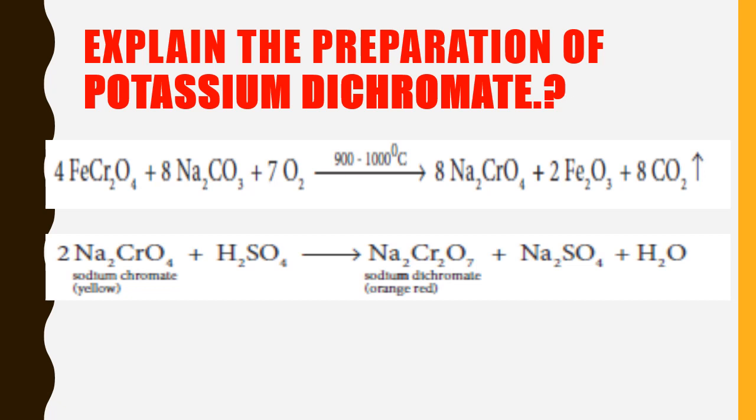The color is yellow. The sodium chromate reacts with acid, specifically sulfuric acid, which is the king of chemicals. The products we find are sodium dichromate.